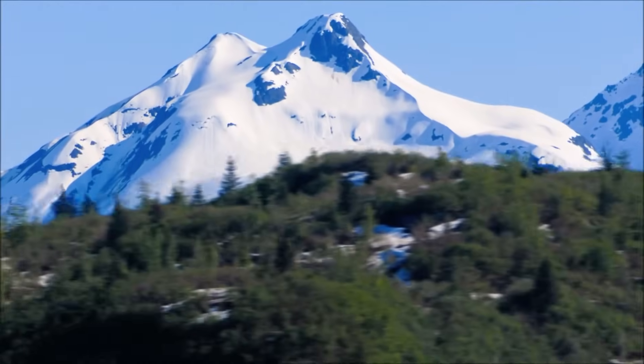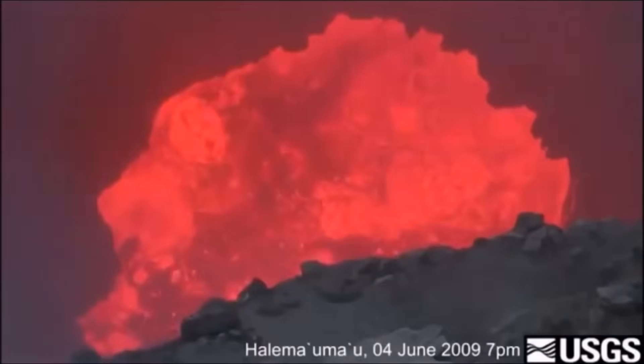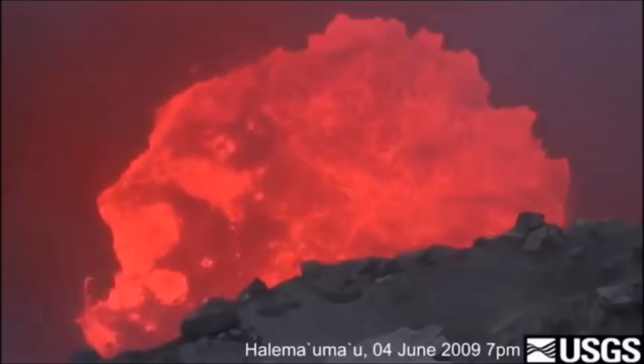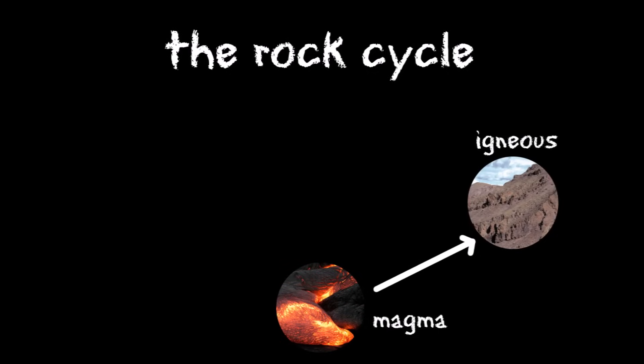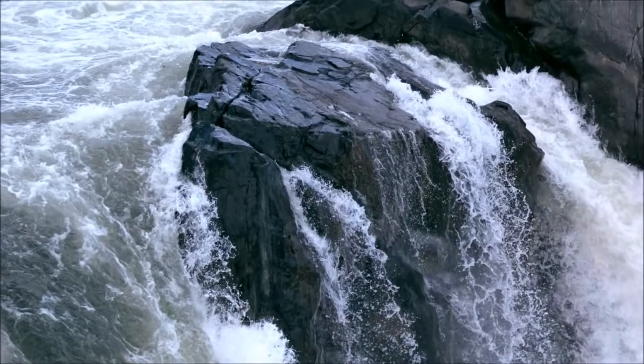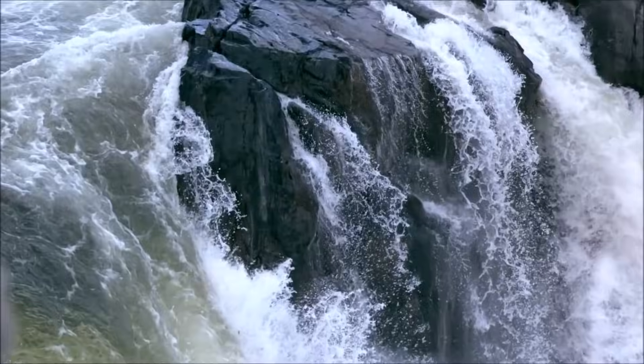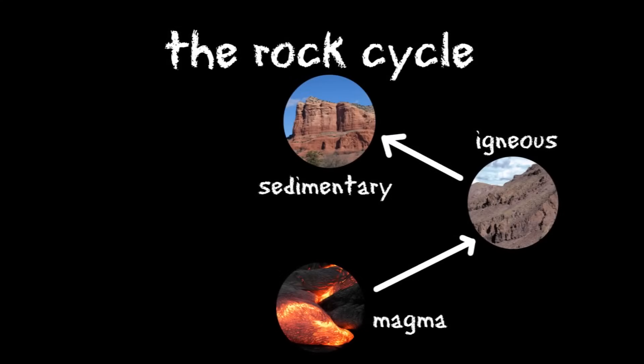Rocks are slowly but constantly changing in something known as the rock cycle. The rock cycle begins with magma, or hot melted rock, deep beneath the Earth's surface. This magma becomes crystallized, becoming igneous rock. These rocks begin to erode, or break down into small pieces because of wind, water, or other forces. The small fragments of rock are carried away as sediment when water passes over them, and are deposited in layers, which eventually become sedimentary rocks.